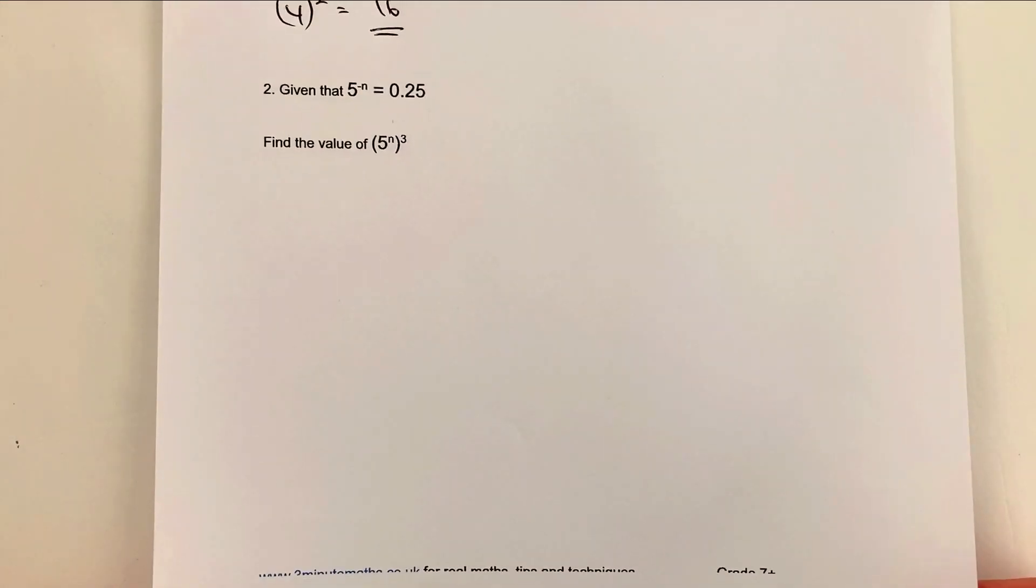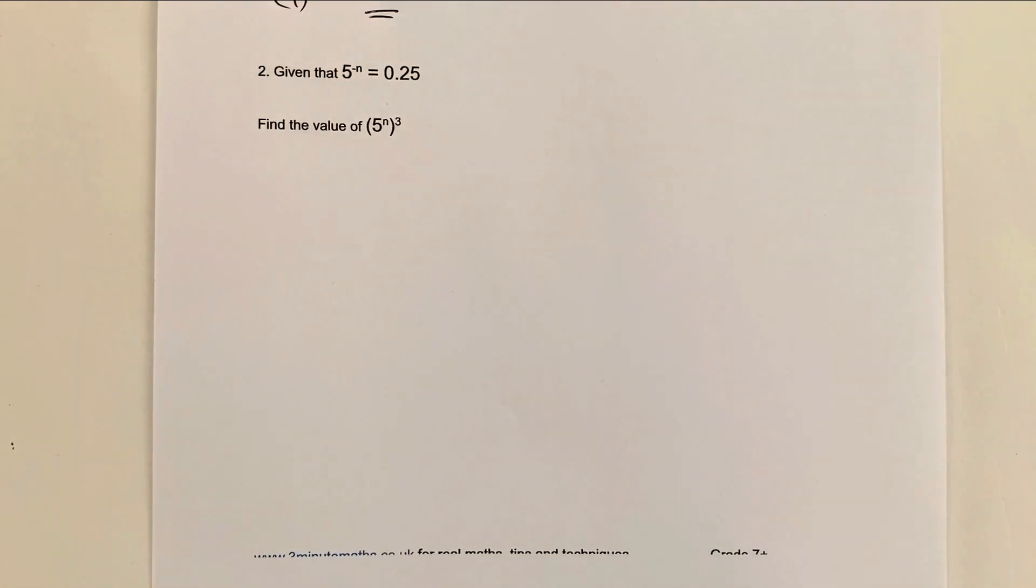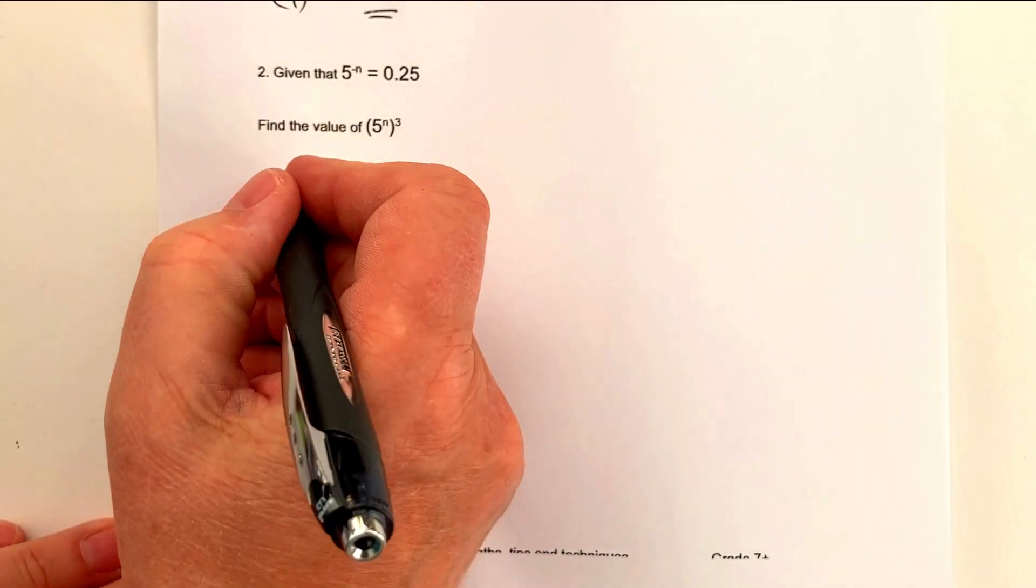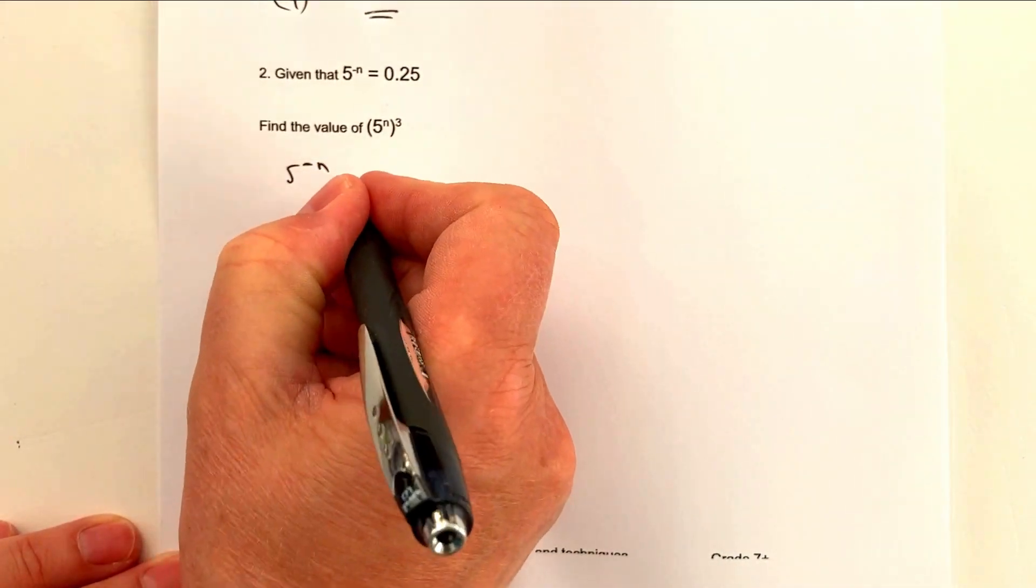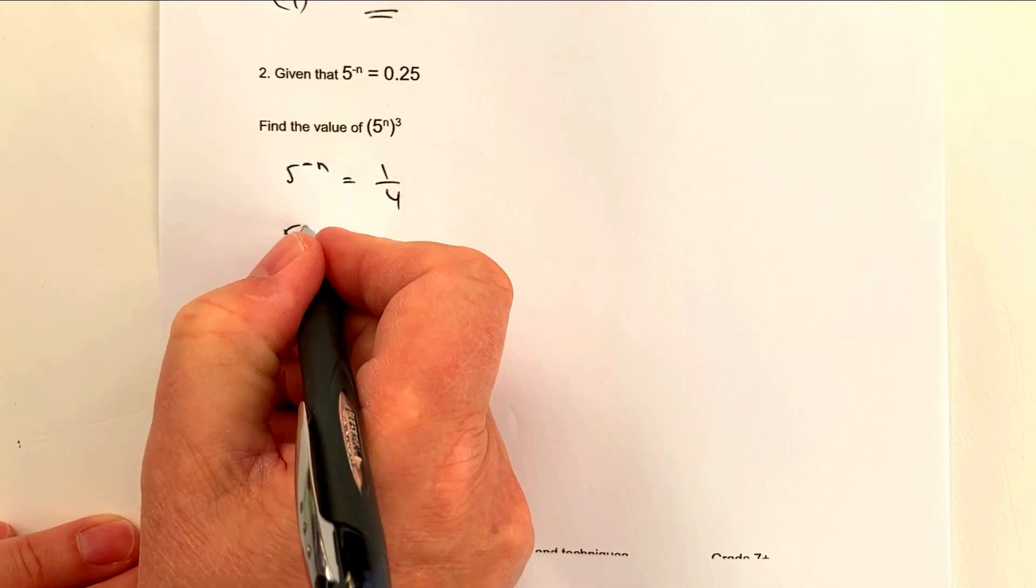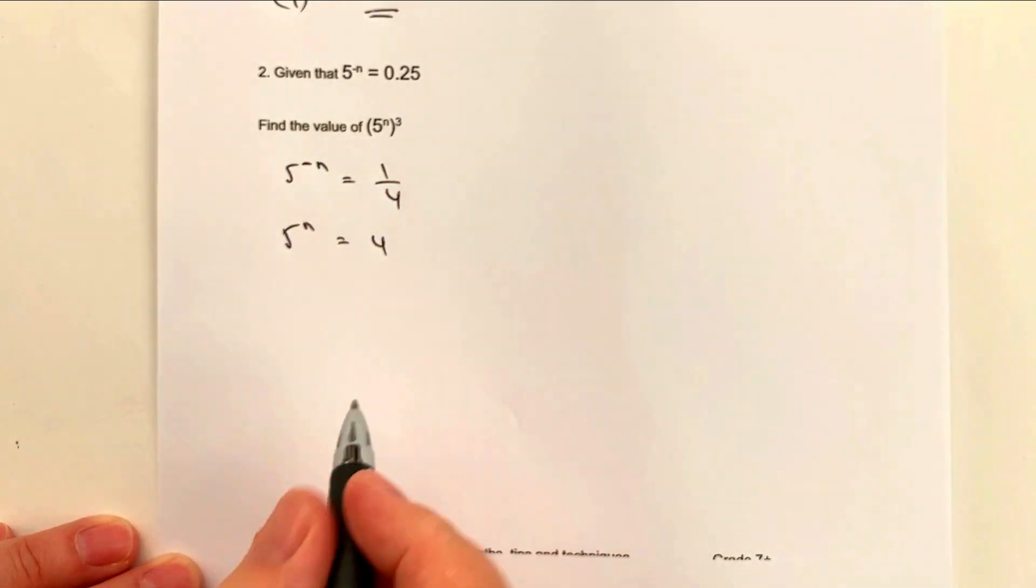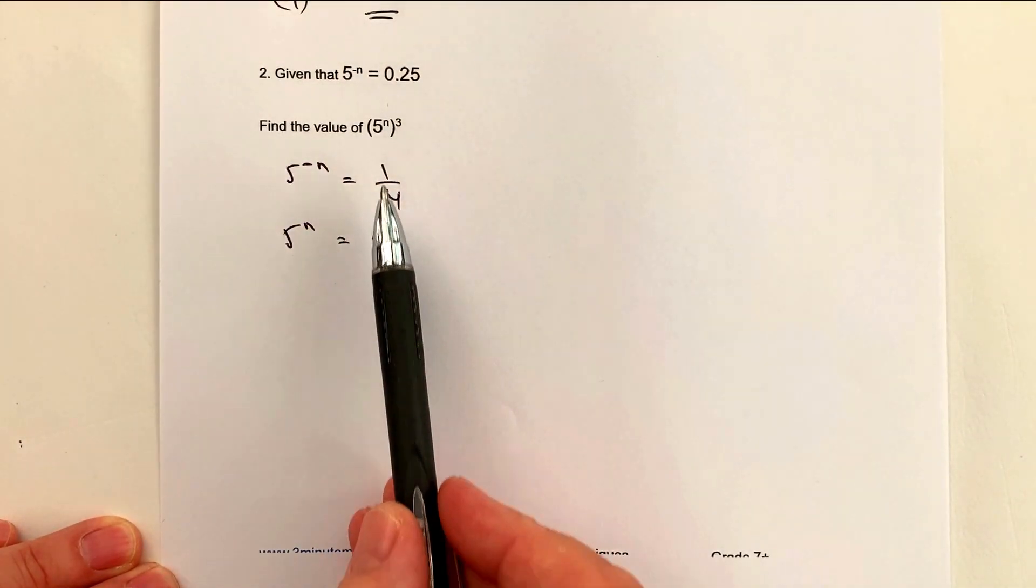Okay, let's just do it again for question number two. You might want to stop the video and have a go at this particular question yourself. We're going to use exactly the same principle: 5 to the power of minus n equals 1 quarter, therefore 5 to the power of n must equal 4. I'm going to take that 4 and put it straight into the expression.